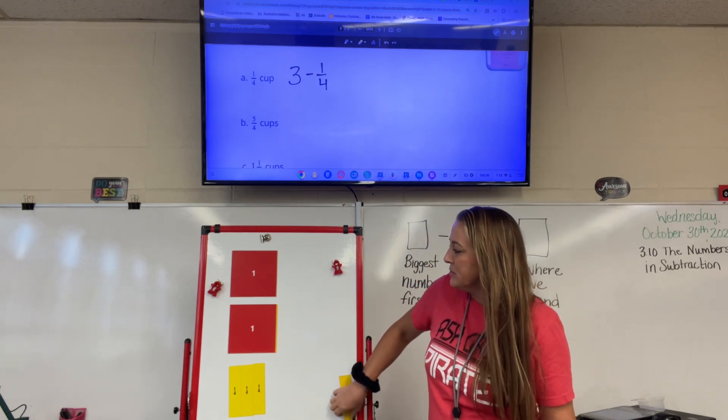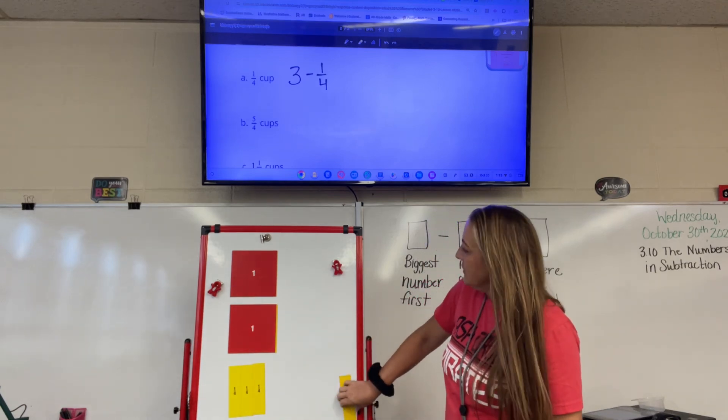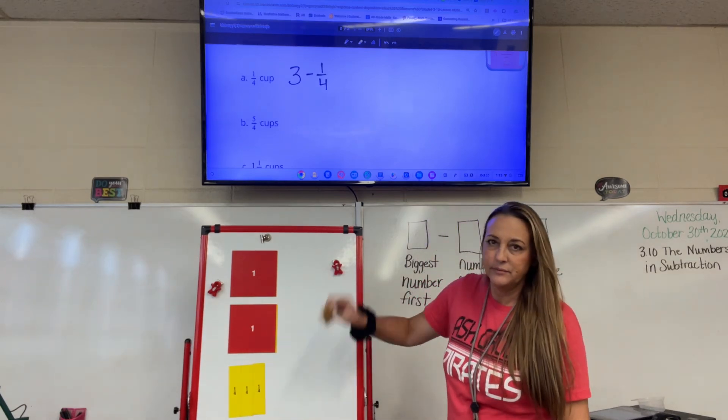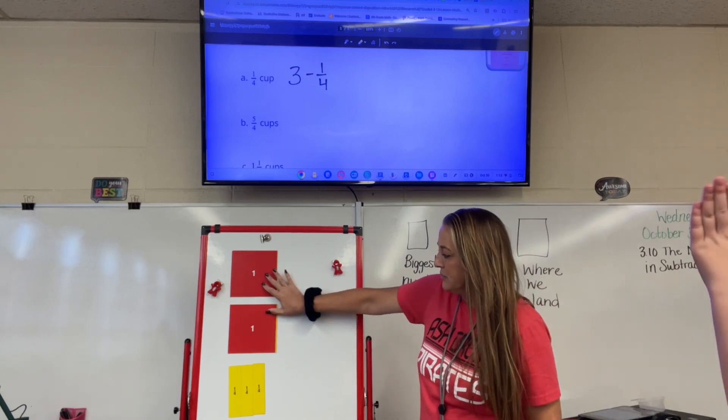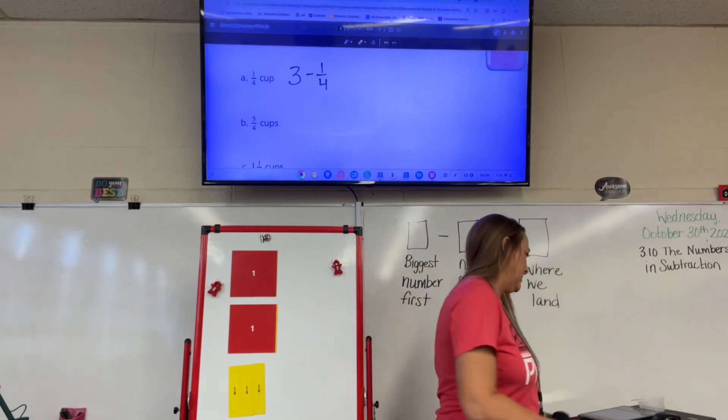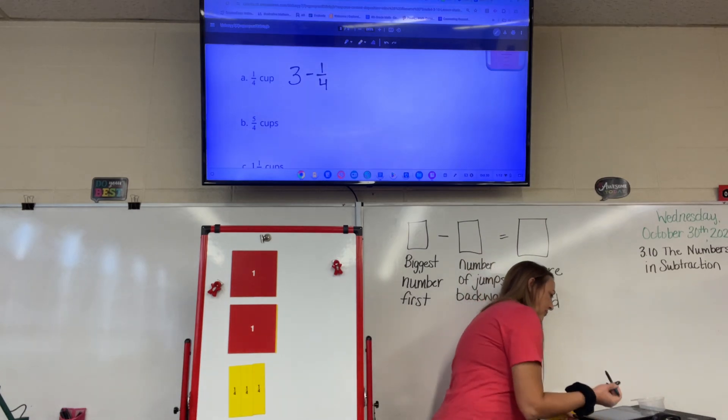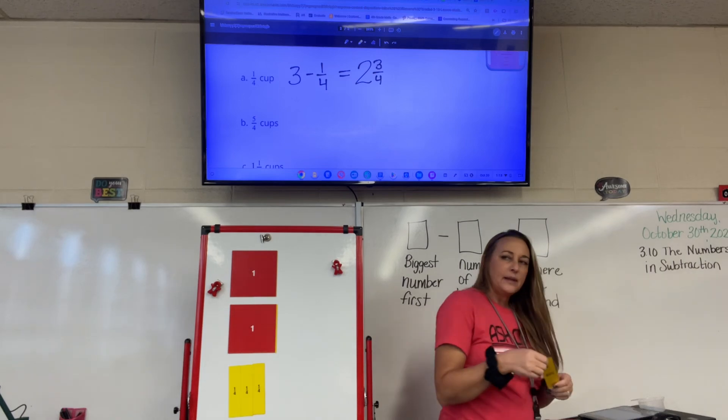If I take three wholes, I turn one into four fourths. Now can I take away one fourths? Yes. And what am I left with? Two wholes and three fourths. That's your answer. So three wholes minus one fourth equals two wholes and three fourths. Write that down.